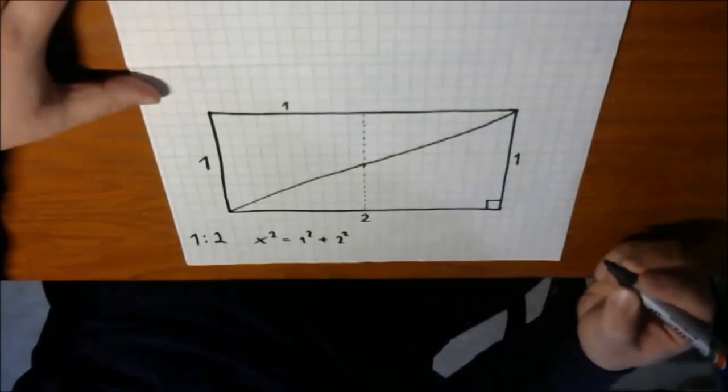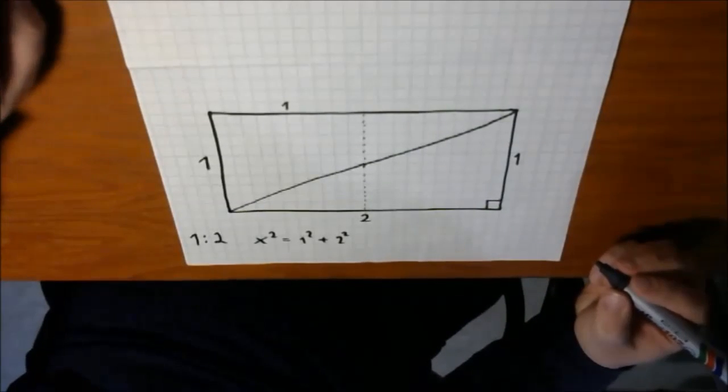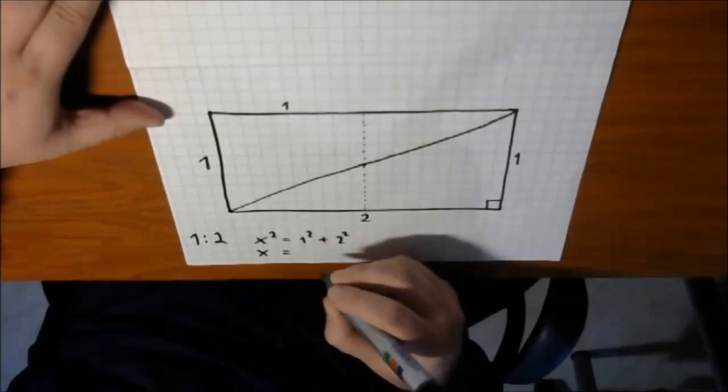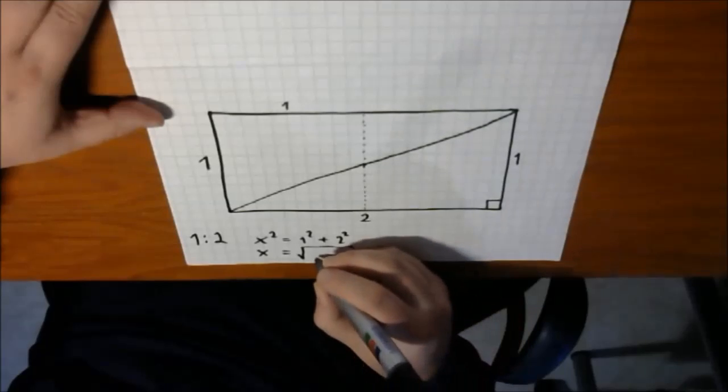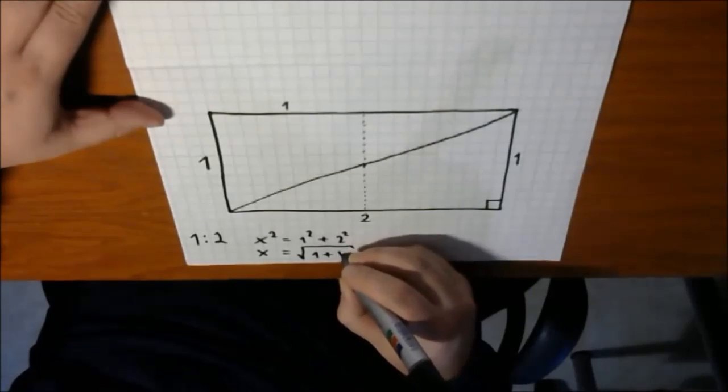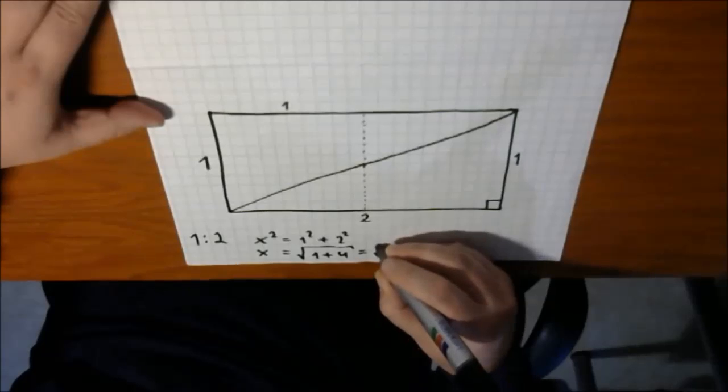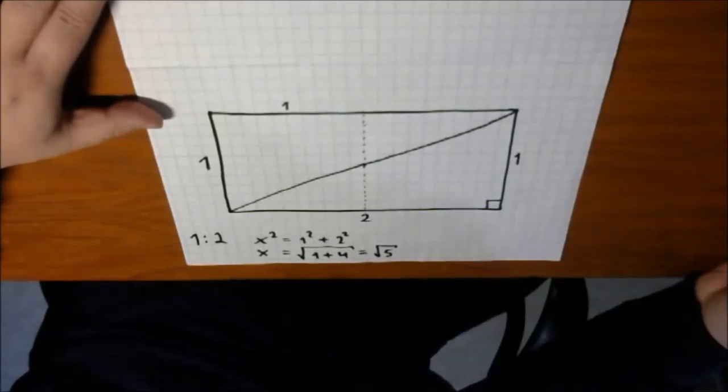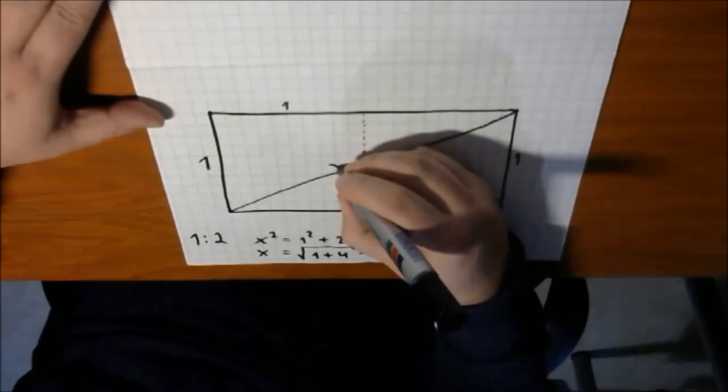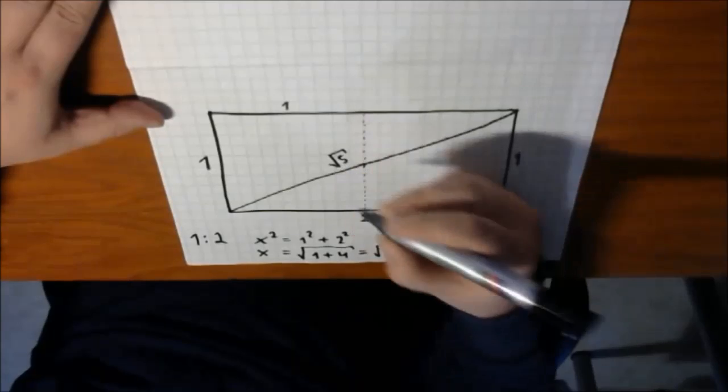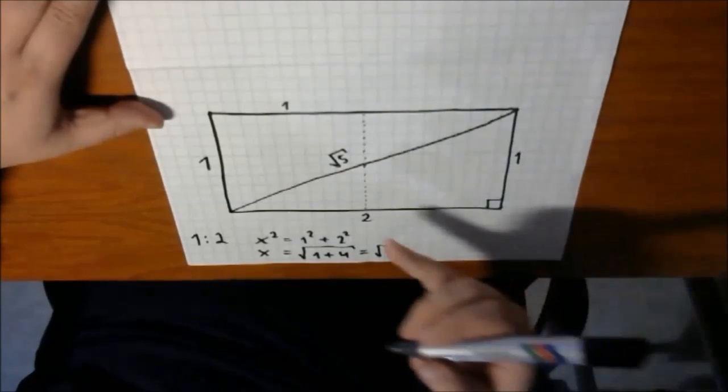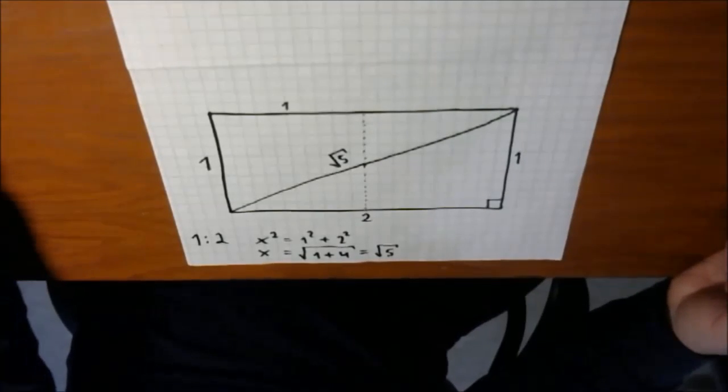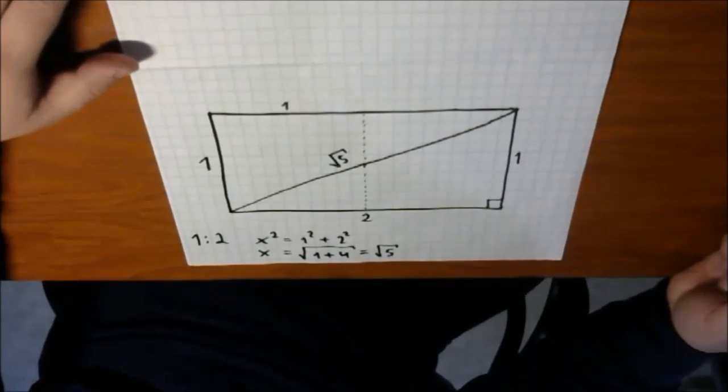Then we just solve the x. And thus we will have, in square root, 1 plus 4 is equal to square root of 5. We can mark it here too. The x is the square root of 5. This is very remarkable number, and it is the number that helps us to reveal the golden ratio.